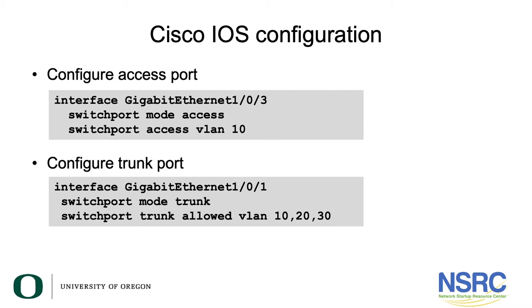To configure a trunk port, you set the encapsulation to 802.1q, the mode to trunk, and you allow specific VLANs — 10, 20, and 30. Note that in this configuration for access and trunk ports you haven't mentioned the words tagged or untagged, but it will send untagged normal frames on the access port and create tags for VLANs 10, 20, and 30 on the trunk port.